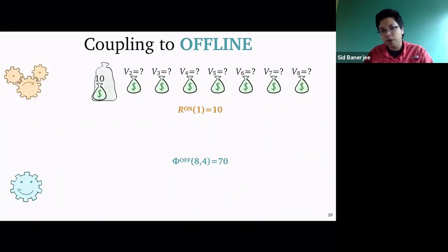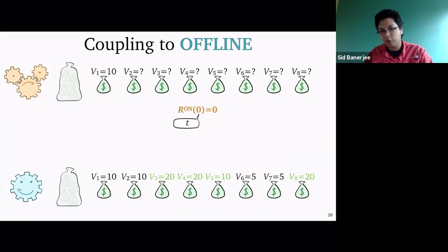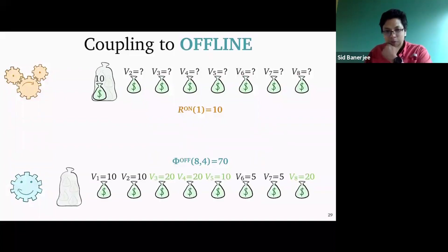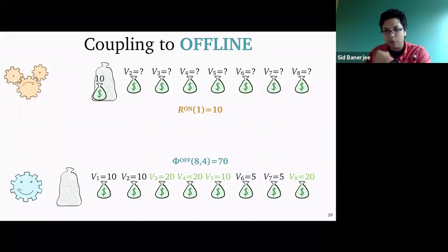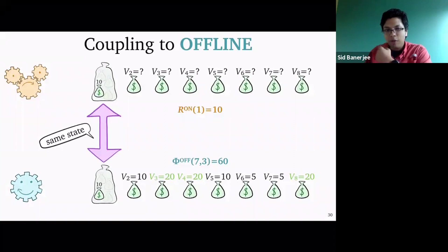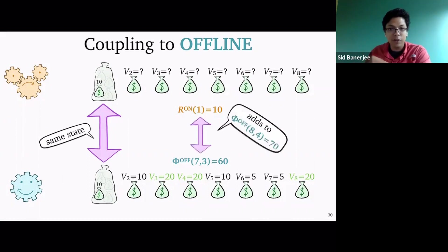What does the online problem do? At each time, it decides whether or not to accept. If it accepts the first item and takes the 10, then r_online(1) becomes 10. The offline problem initially wasn't thinking of accepting the 10, but if it does accept the 10, nothing changes: it has value 10 and the future problem with 7 things to go and capacity 3 has total future value still 60. I've now taken the online and offline problems and coupled them together so they have exactly the same state — they've accepted the same number of things. Moreover, the sum of r_online plus phi_offline equals the initial offline value of 70.